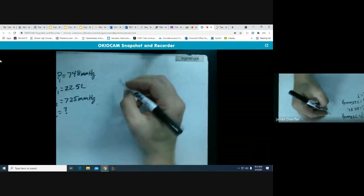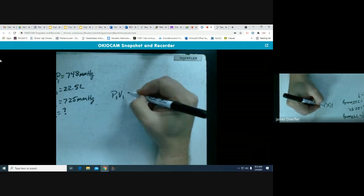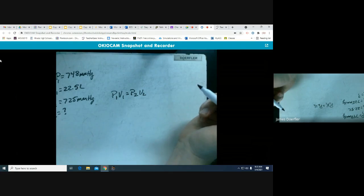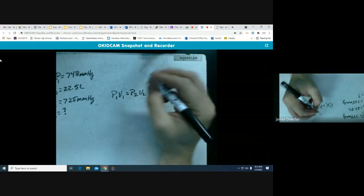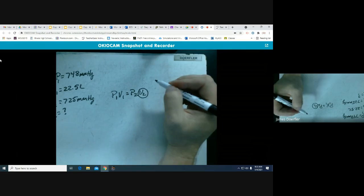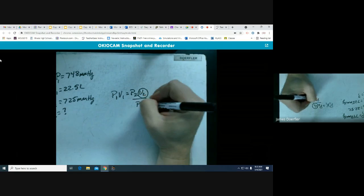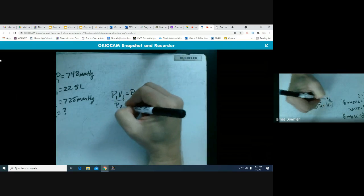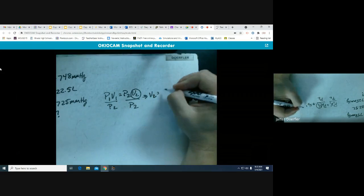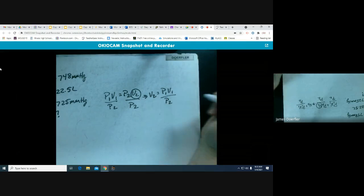Looking at Boyle's law, P1V1 equals P2V2. We are trying to solve for V2 because it says, what was the new volume? So I'm going to divide both sides by P2, and now I'm going to have the formula set up of V2 is equal to P1V1 over P2.